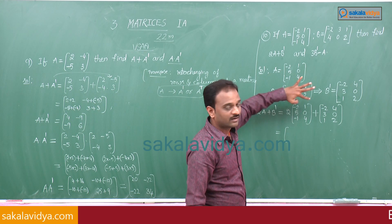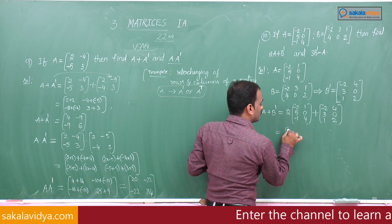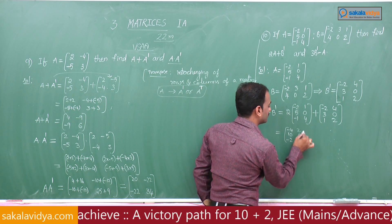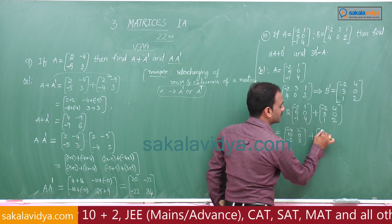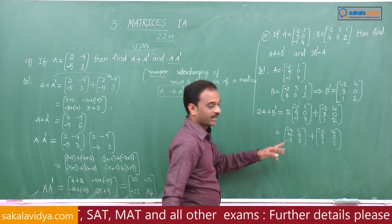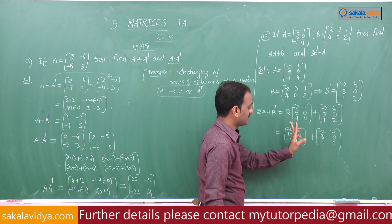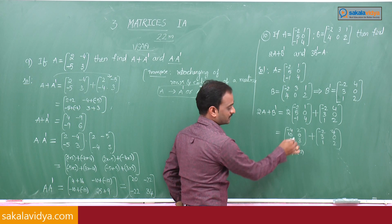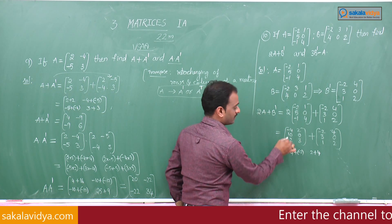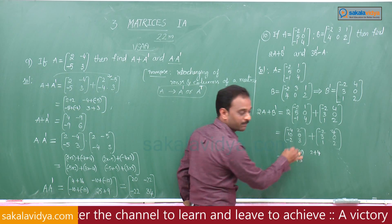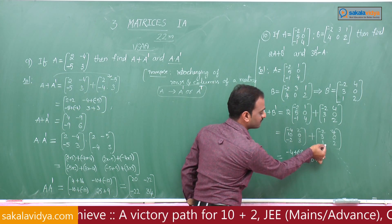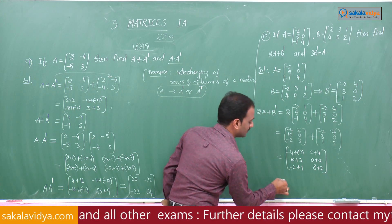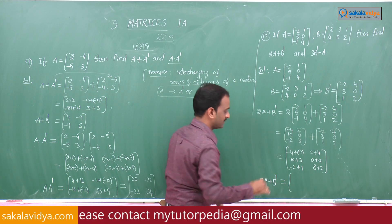Scalar product 2 into A: 2×(-2)=-4, 2×1=2, 2×5=10, 2×0=0, 2×(-1)=-2, 2×4=8. Then adding corresponding elements with B transpose: -4+(-2), 2+4, 10+3, 0+0, -2+1, 8+2.